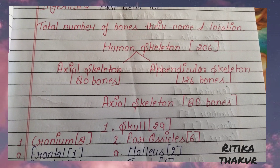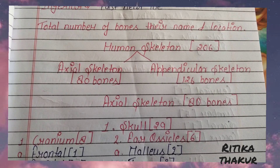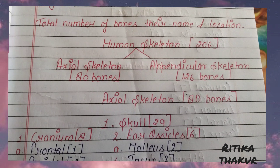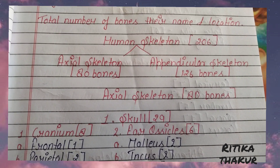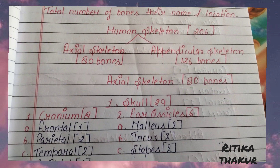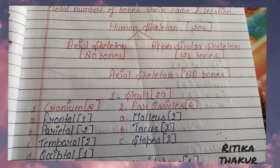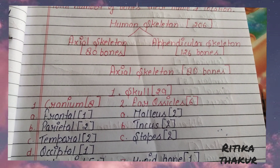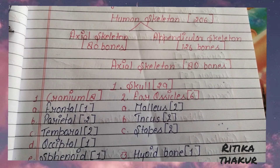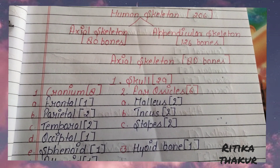Total number of bones by location: Human skeleton 206. Axial skeleton 81, Appendicular skeleton 126. Skull 29. Cranium 8: Frontal 1, Parietal 2, Temporal 2, Occipital 1, Sphenoid 1, Ethmoid 1.